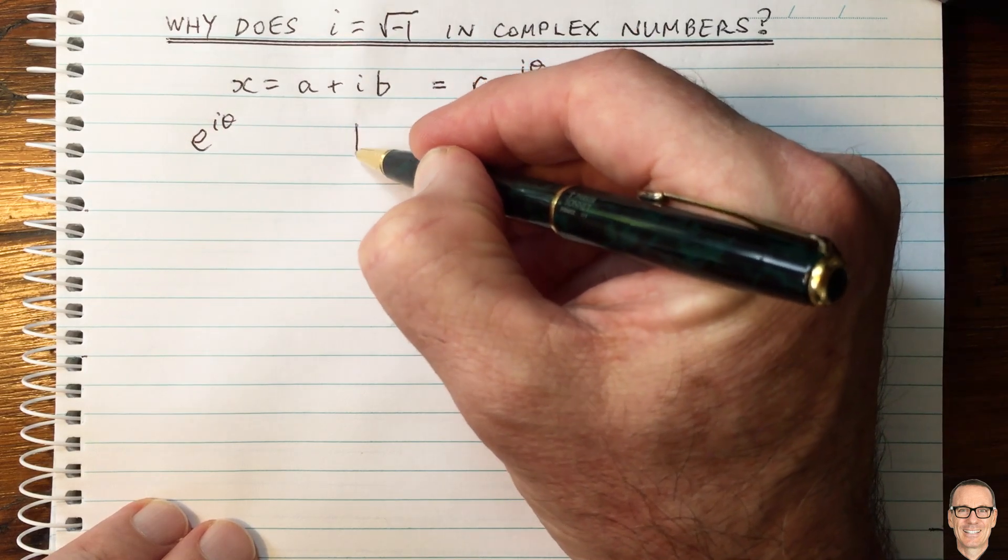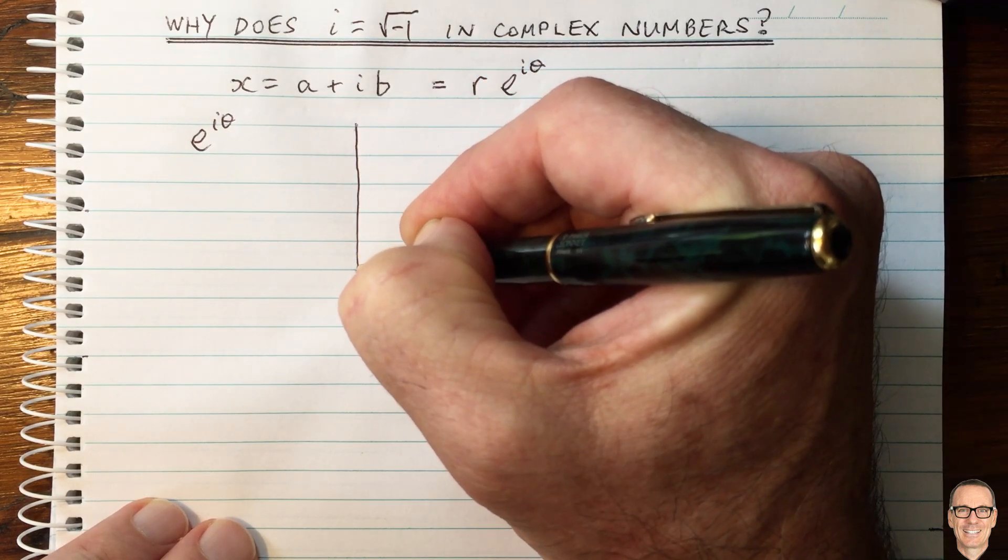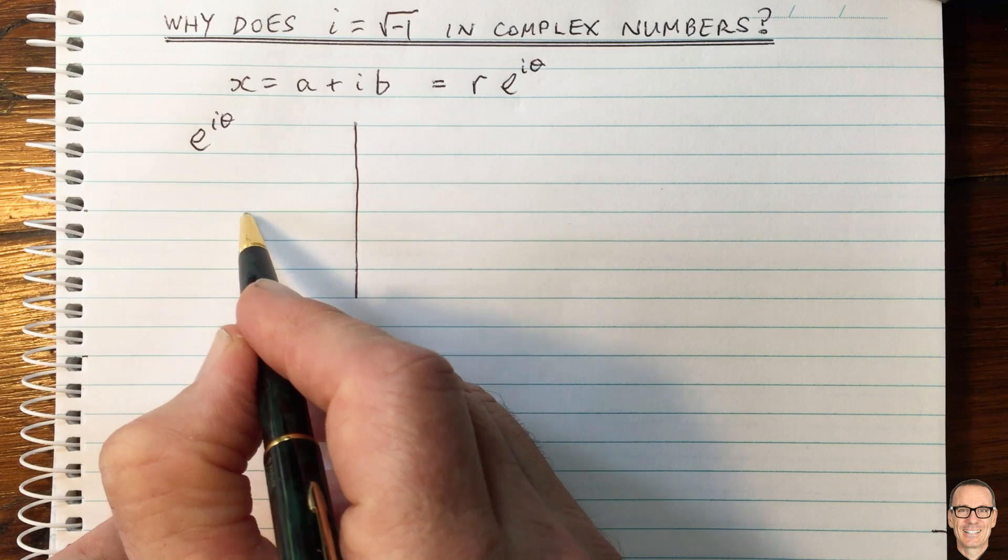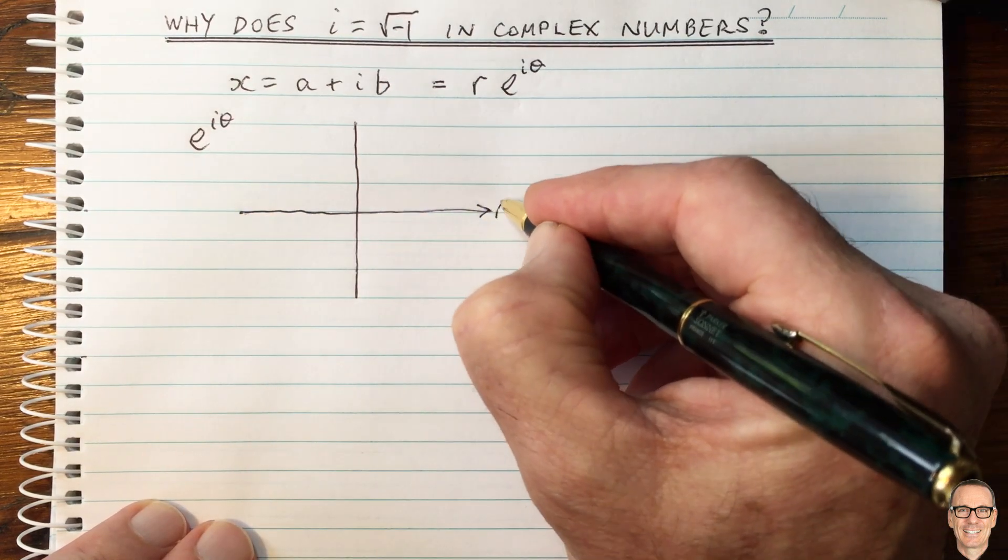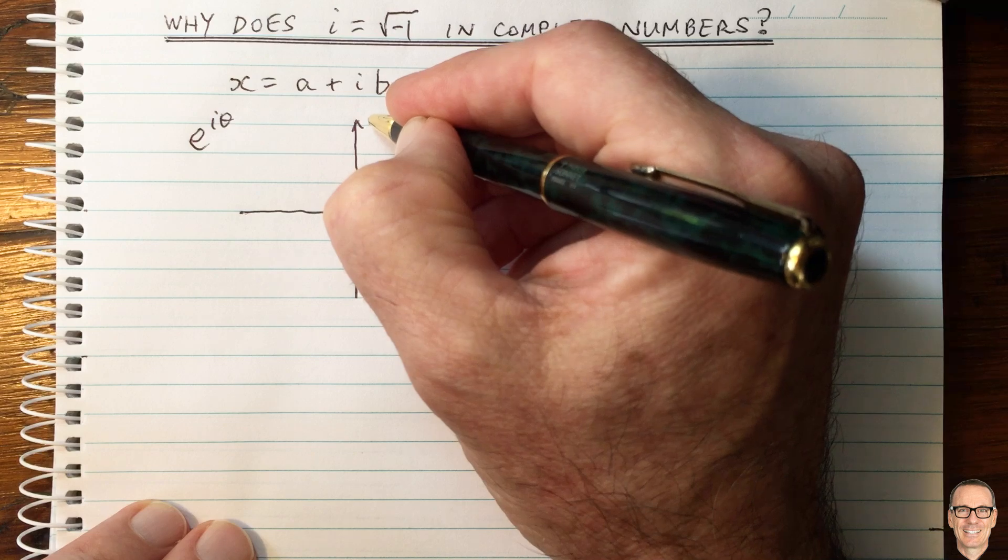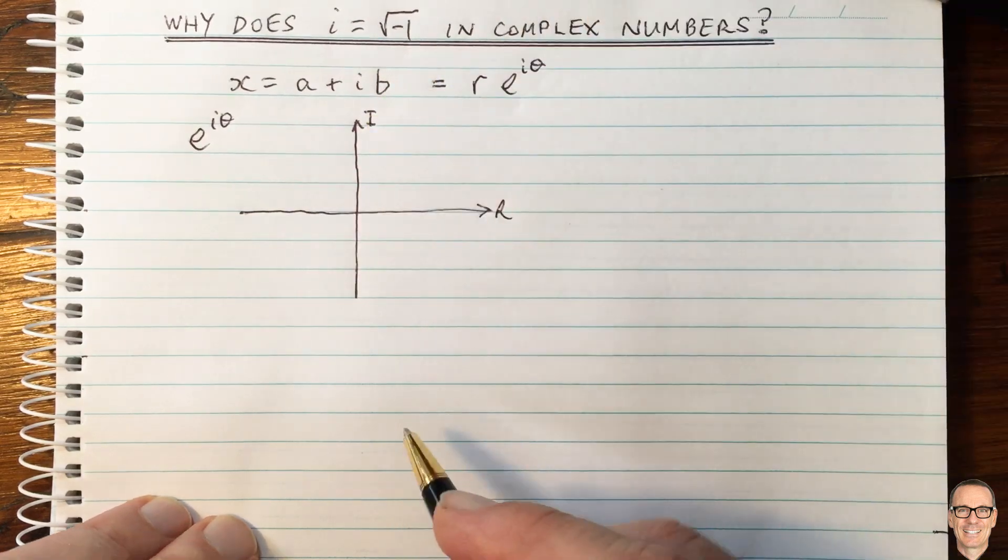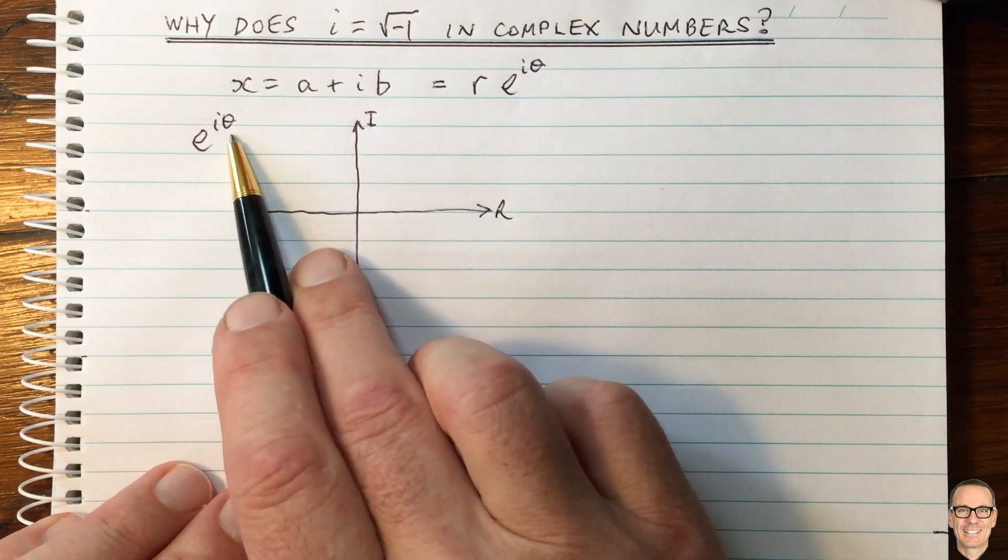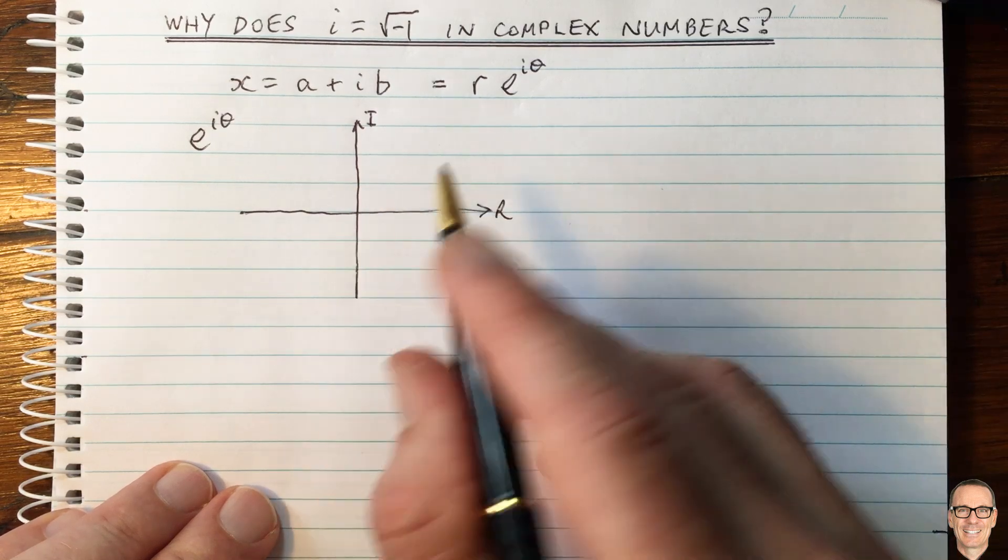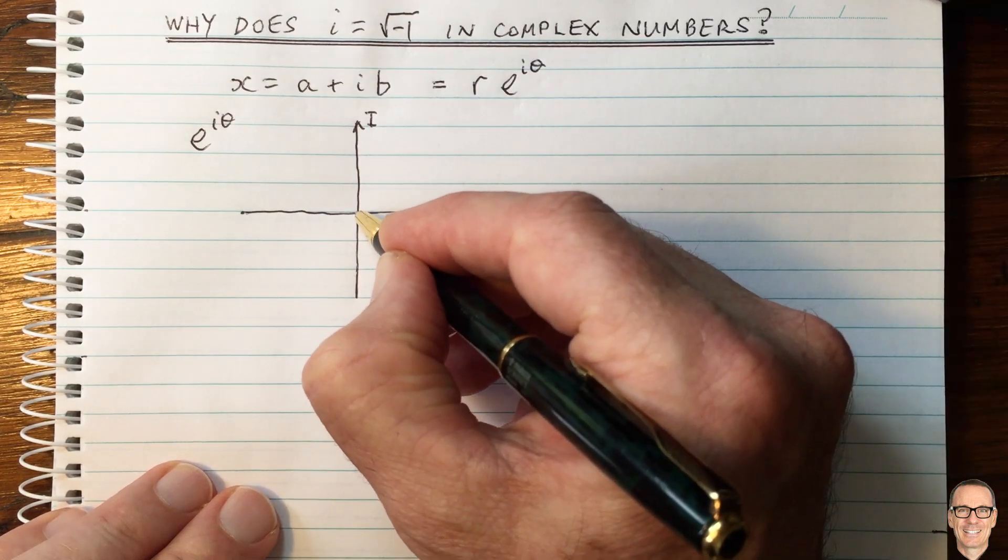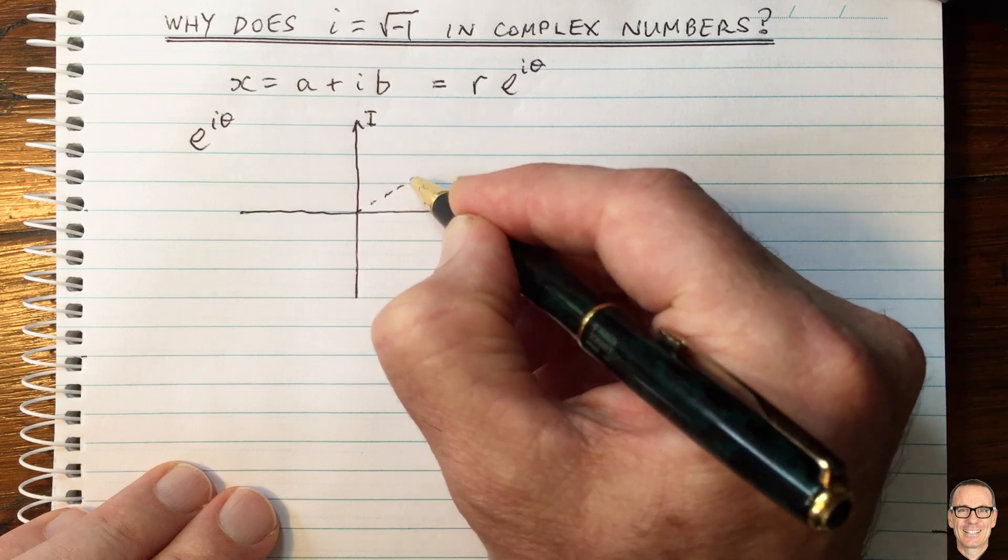So we can actually plot this on a Cartesian form plot, where we have the real part in the horizontal direction and the imaginary part in the vertical. We sometimes call this the complex plane. Now where is this? Well, it's got a magnitude of 1, so that means the distance from the origin equals 1, and it's got a phase of theta.